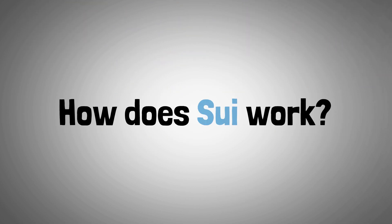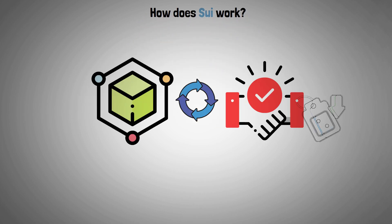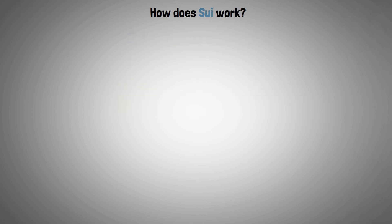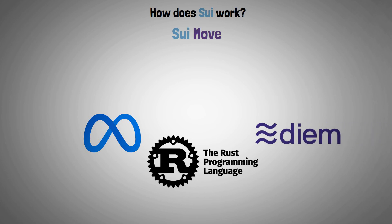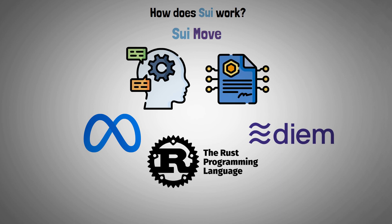But how exactly does SUI work? The SUI blockchain's ability to process instant settlements at a low cost is made possible by three key components. The first is SUI Move — based on the Rust programming language and initially created by Meta for the Diem blockchain — the SUI Move programming language supports the execution of smart contracts.